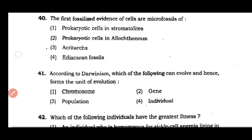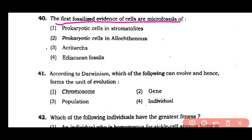Question number 40: The earliest fossilized evidence of cells are micro-fossils of prokaryotic cells in stromatolites, prokaryotic cells in alioconthonas, acritarchs, or Ediacaran fossils. The answer is option 1 — the earliest fossil evidence of cells was found as micro-fossils of prokaryotic cells, especially cyanobacteria, in stromatolites.